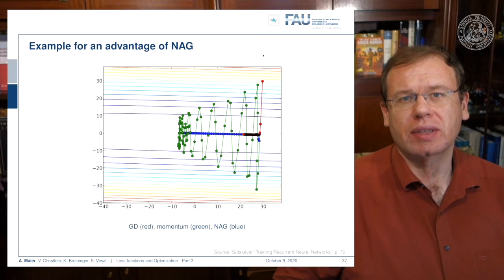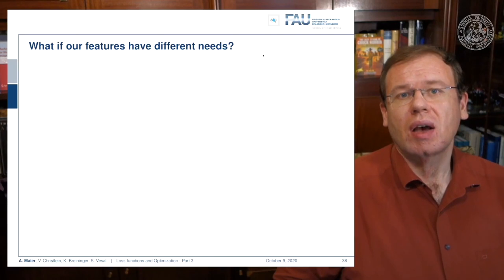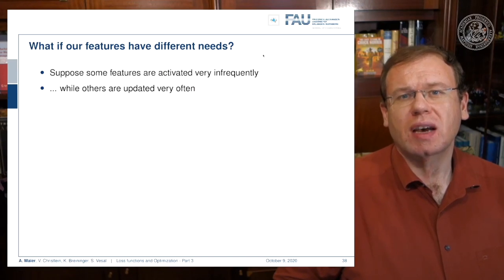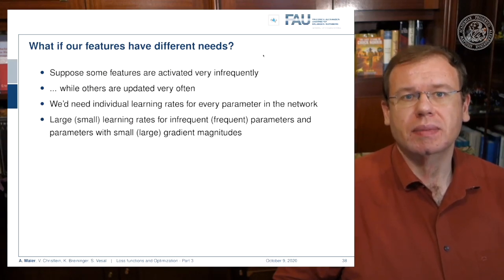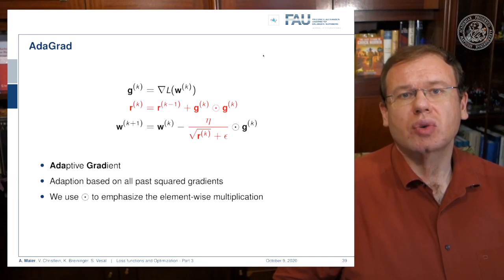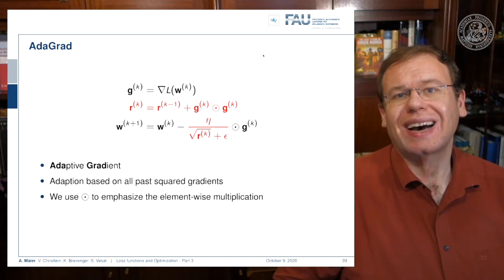So we are directly moving towards the desired minimum and we are no longer alternating. This is an advantage of Nesterov. What if our features have different needs? Suppose some features are activated very infrequently while others are updated very often. Then we would need individual learning rates for every parameter in the network. We need large learning rates for infrequent parameters and small learning rates for frequent parameters in order to accommodate the changes appropriately.